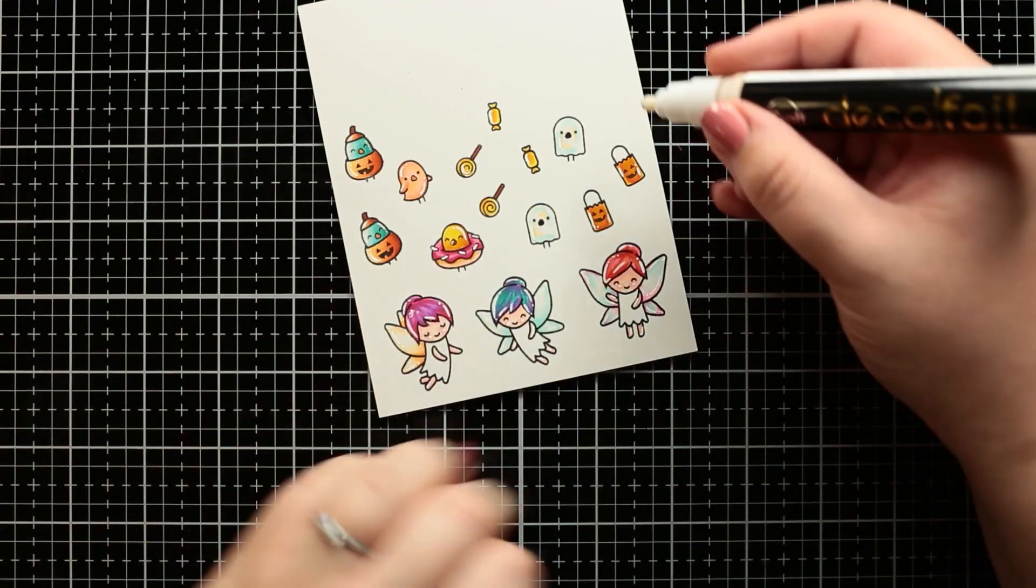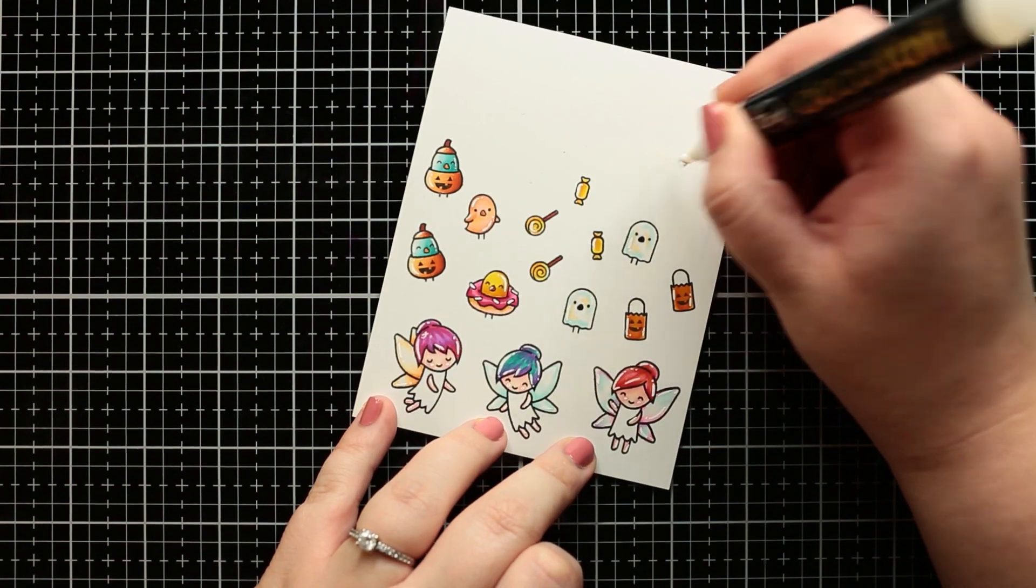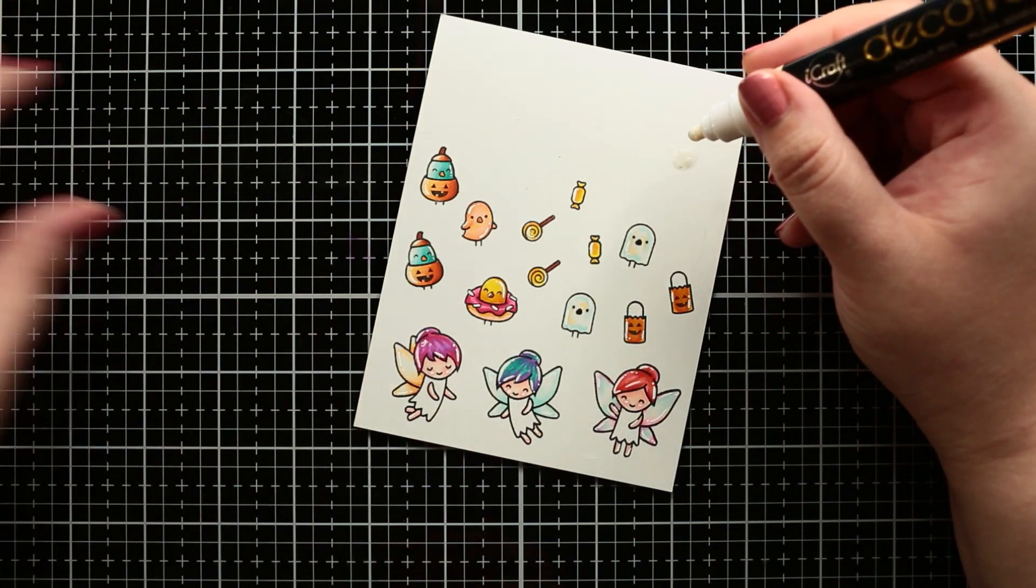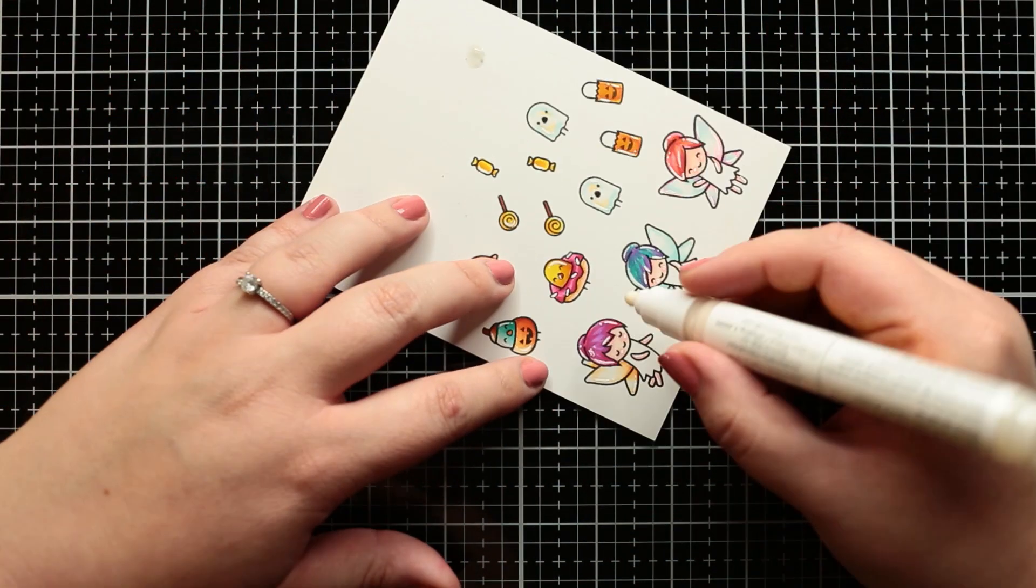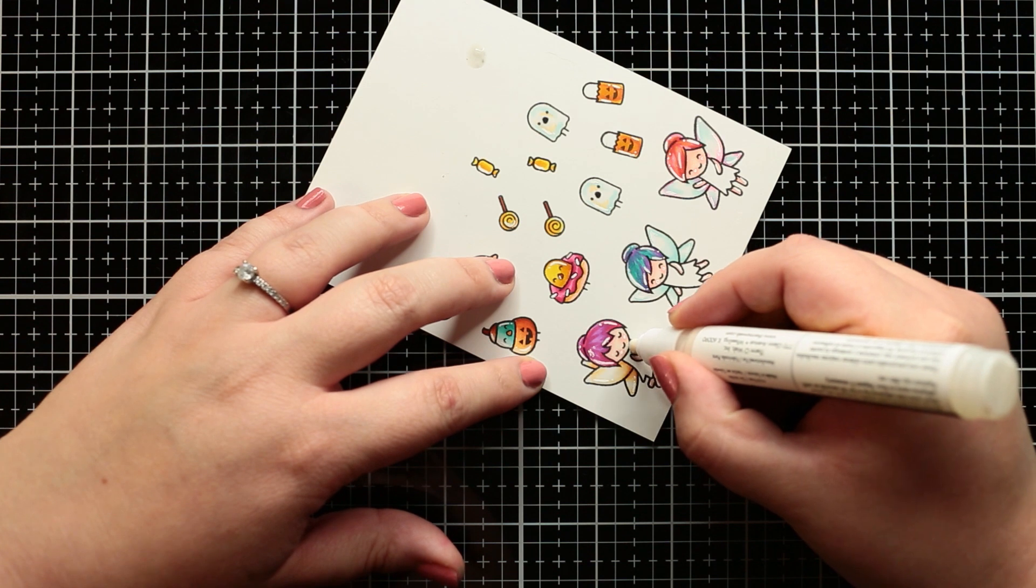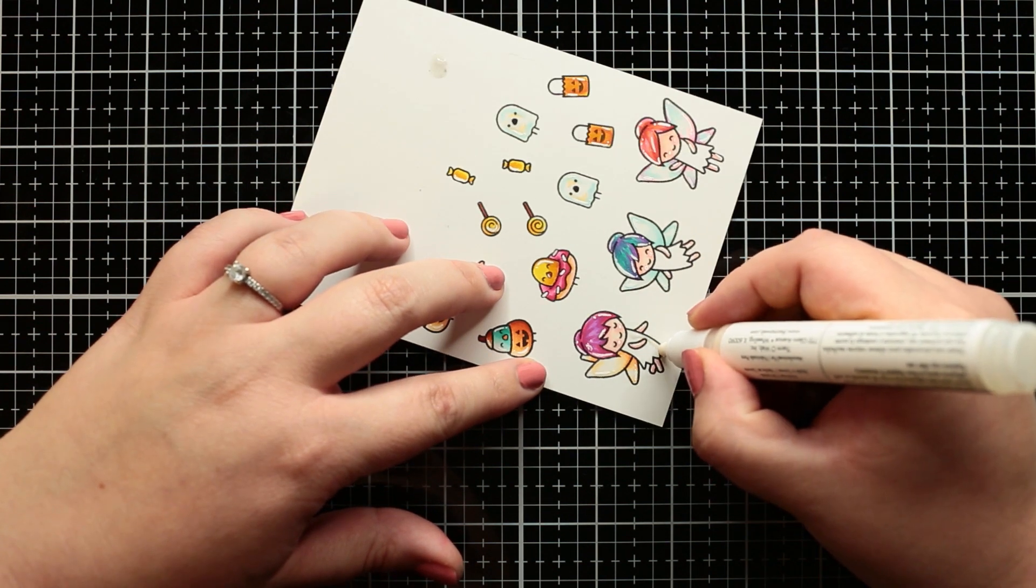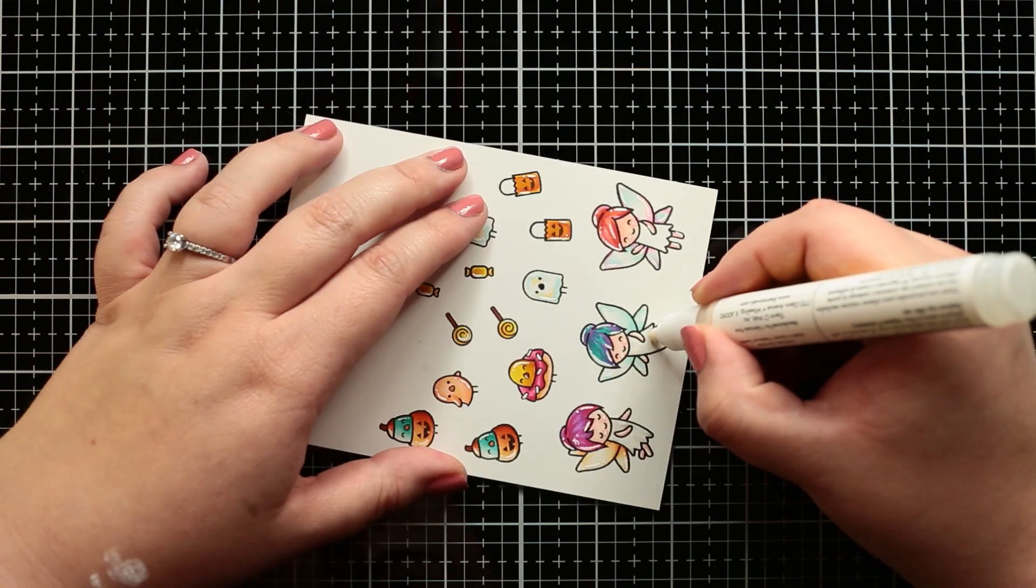I'm going to make this with help of the Decofoil adhesive pen. All you need to do is pick a scrap piece of paper or a clean corner on your cardstock. Press down your pen and hold the adhesive tip until it starts to flow. And you're ready to go.